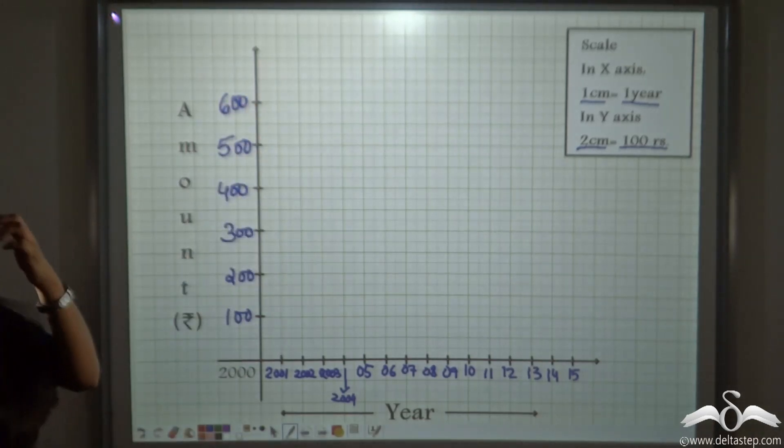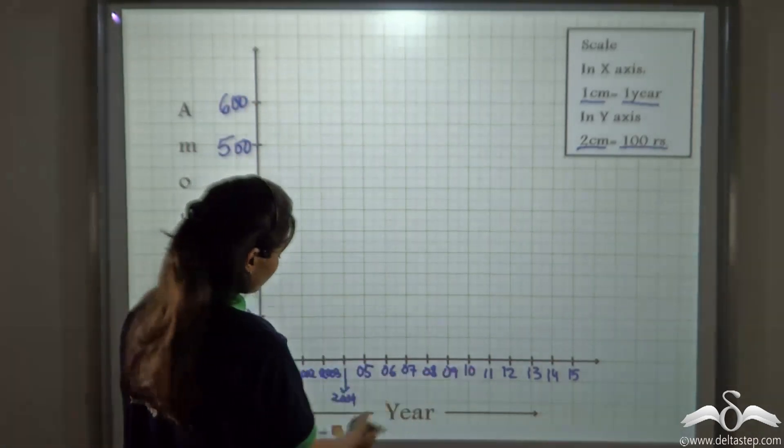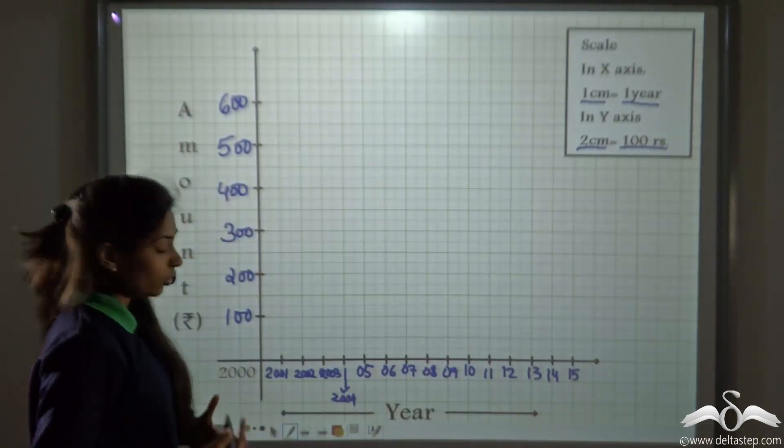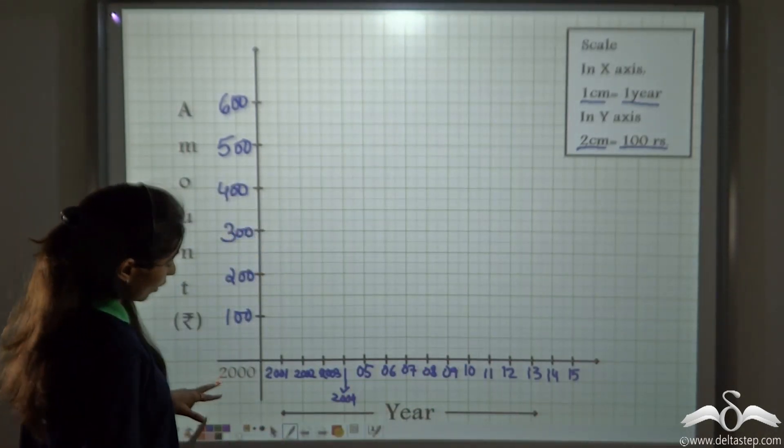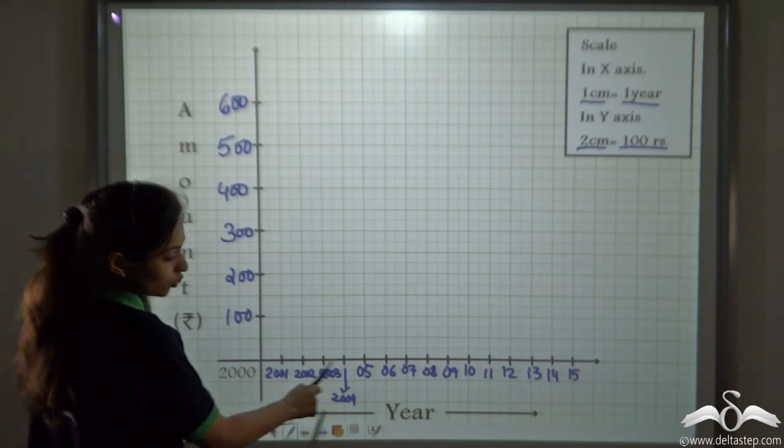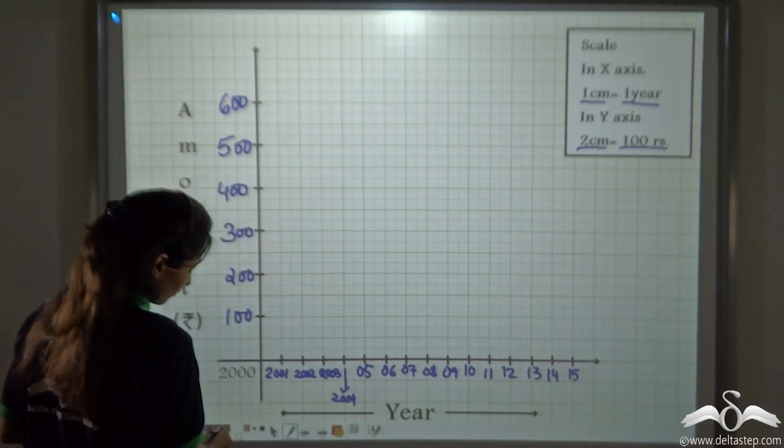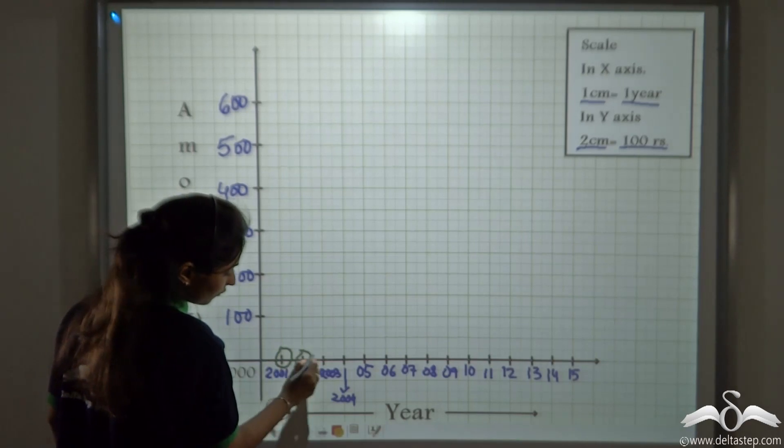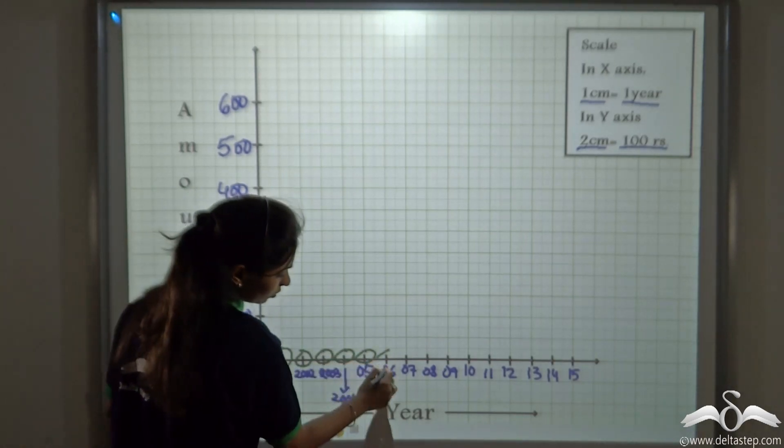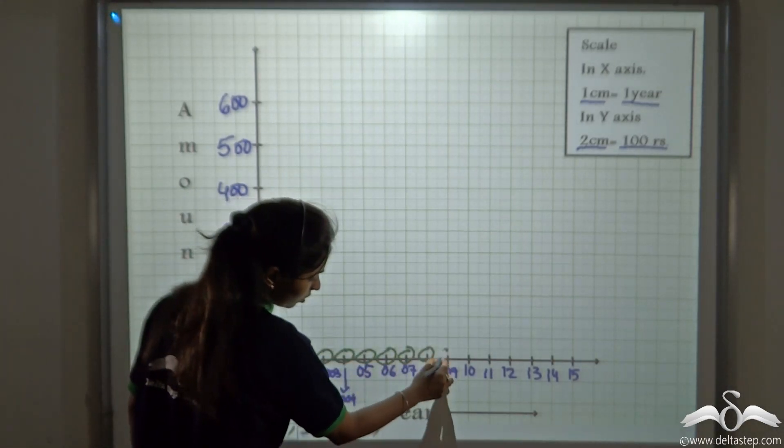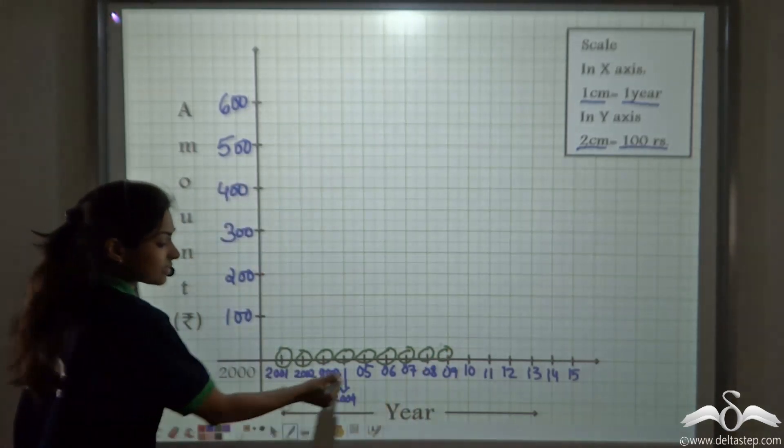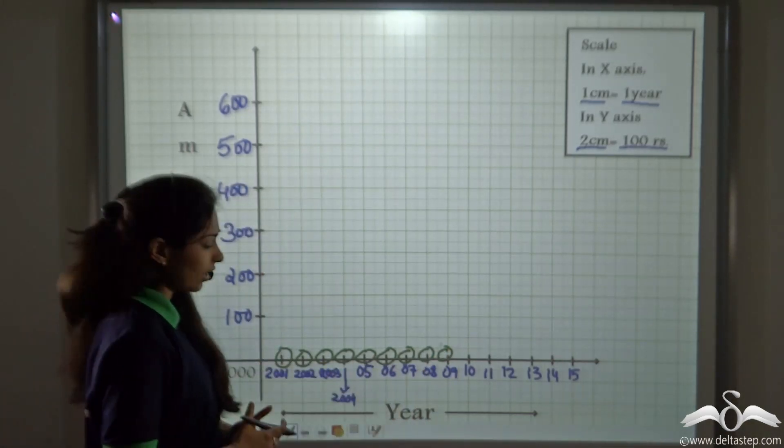But well, isn't it looking very clumsy? And as we all know, you have not got any pocket money from the year 2000 to 2009. So all these years you have no pocket money. So why am I even writing these years on the graph line? I should not write that.